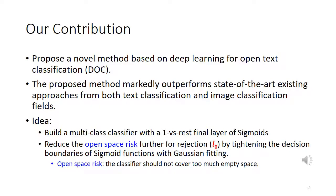In this paper, we propose a novel method based on deep learning for open-text classification, DOC for short. The proposed method markedly outperforms state-of-the-art existing approaches from both the text classification and image classification fields. The idea is that we build a multi-class classifier with a one-versus-rest final layer of sigmoid functions. To reduce the open space risk further for rejection, we tighten the decision boundaries of sigmoid functions with Gaussian fitting. The open space risk means that the classifier should not cover too much empty space.